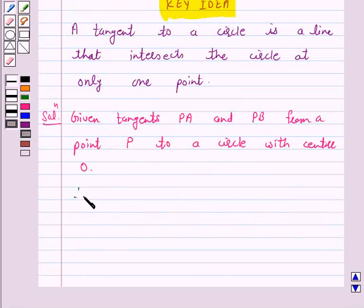Therefore, PA is equal to PB because the length of tangents drawn from an external point to a circle are equal.